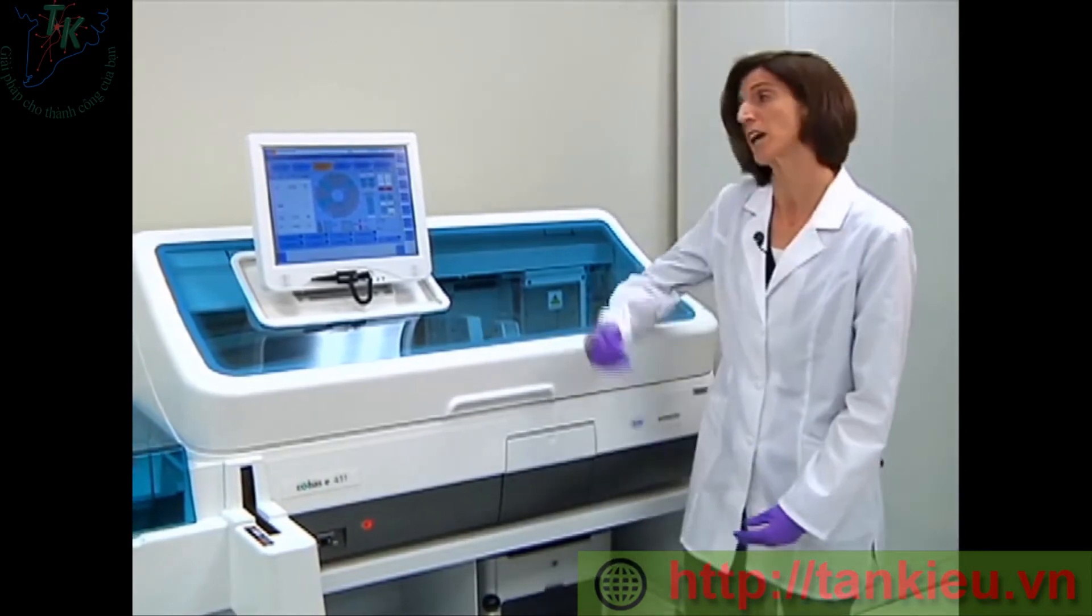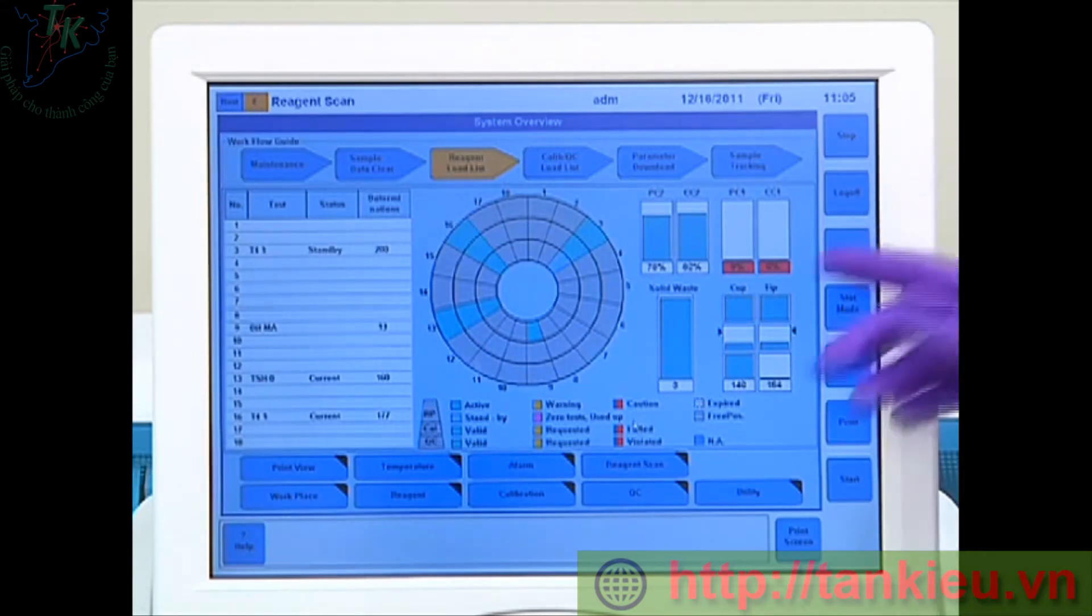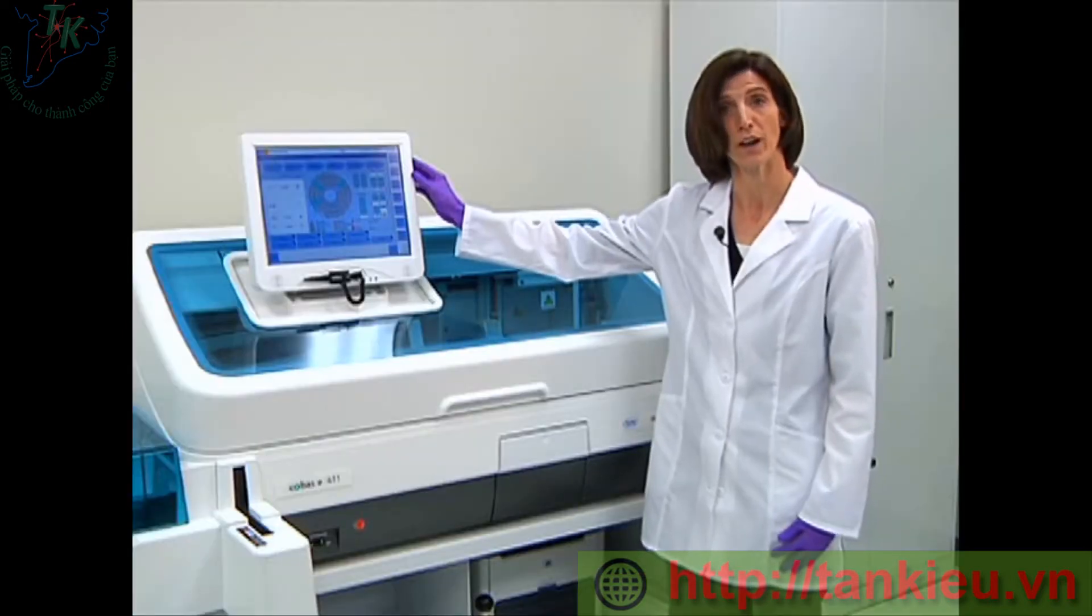In addition, it's going to check both the ProCell and CleanCell inventory and also our cups and tips. Once it finds the ProCell CleanCell set that we loaded, it will update the volume automatically and remove our red color and our yellow color for our reagent load list. After the completion of our reagent scan, we know that we have loaded all of the reagent and consumables required for our daily operation.